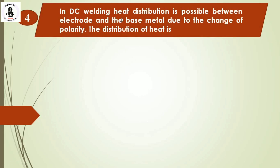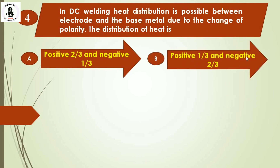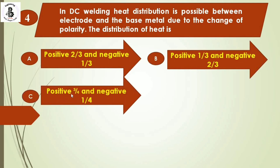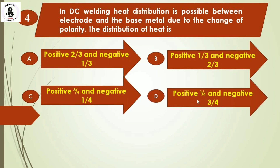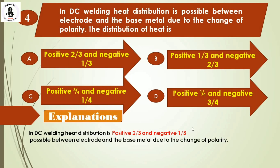The next question: in DC welding, heat distribution is possible between electrode and base metal due to change of polarity. Option A: positive two-thirds and negative one-third, Option B: positive one-third and negative two-thirds, Option C: positive three-fourths and negative one-fourth, Option D: positive one-fourth and negative three-fourths. In DC welding, heat distribution is positive two-thirds and negative one-third. Option A. If you change polarities from positive to negative, the heat distribution also changes.